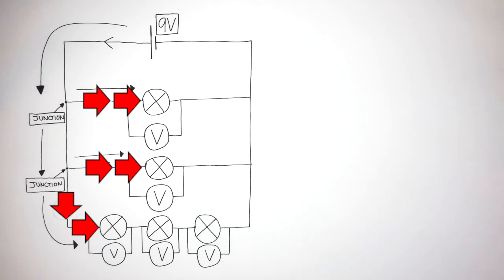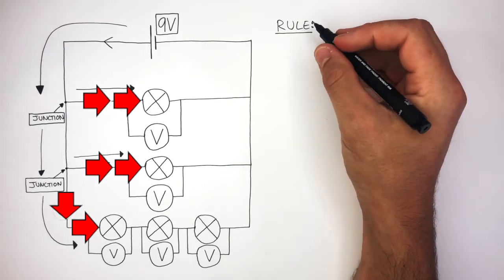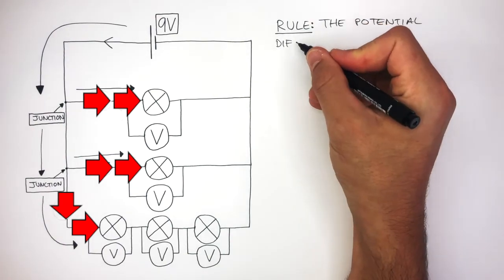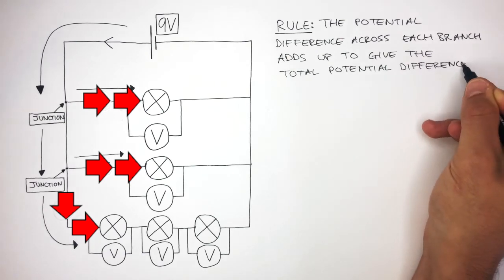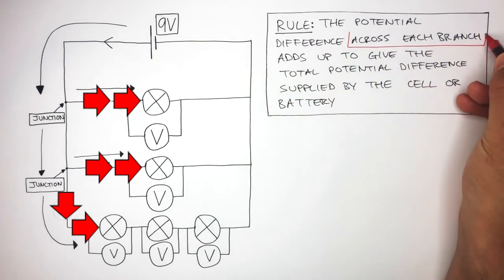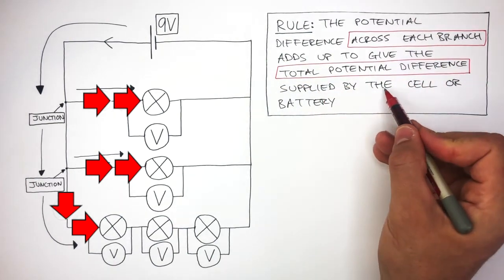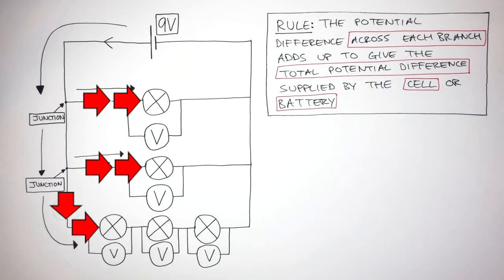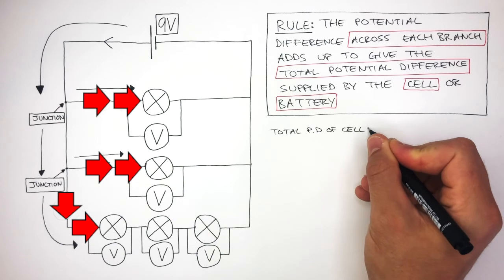We're now going to figure out, using the rule from before, what the potential difference is at each voltmeter. The rule is: the potential difference across each branch adds up to give the total potential difference supplied by the cell or battery. This means the potential difference across each branch must be the same as that supplied by the cell — in this case, nine volts.